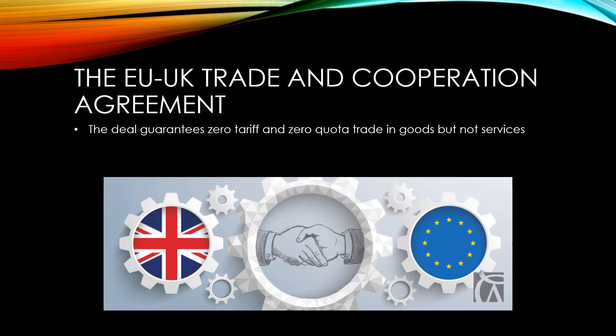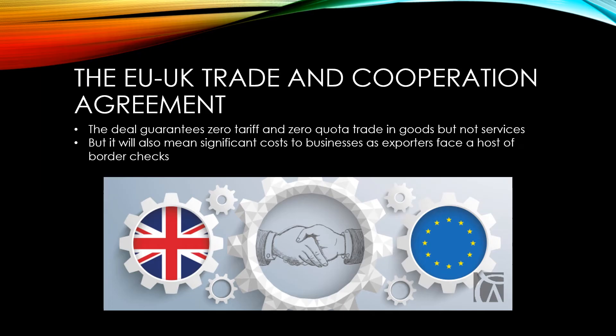This may lead to a problem in the future as the UK has a thriving financial services industry that relies on trade with the EU. Despite agreeing zero tariffs and zero quotas on the trade in goods, there can still be significant costs to businesses as exporters face additional border checks, because the EU and the UK no longer agree on the rules and regulations surrounding the products they're exchanging. These additional border checks can have a particularly large cost on producers with products that have a short shelf life, such as those who export seafood to Europe.